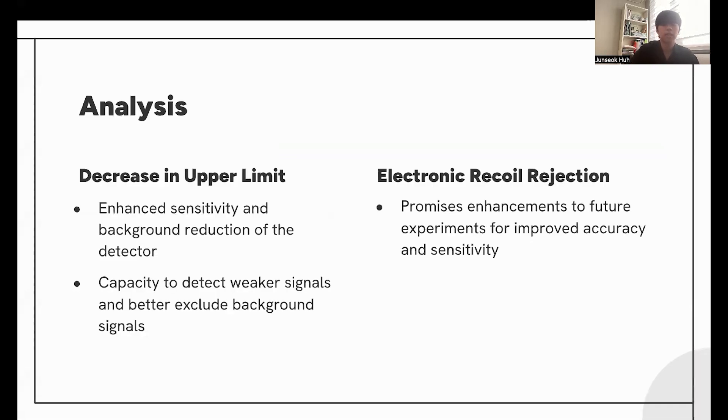The analysis of the data: the decrease in the WIMP nucleon cross-section upper limit signifies the enhanced sensitivity and background reduction of the detector, since it shows how the experimental parameters of the detector have become more stringent compared to xenon 1T. It's capable of detecting weaker signals. The electronic recoil rejection rate promises enhancements to future experiments for improved accuracy and sensitivity, and it also suggests that the current detector and technology is way more sensitive, since it can better exclude electronic recoil background noise.